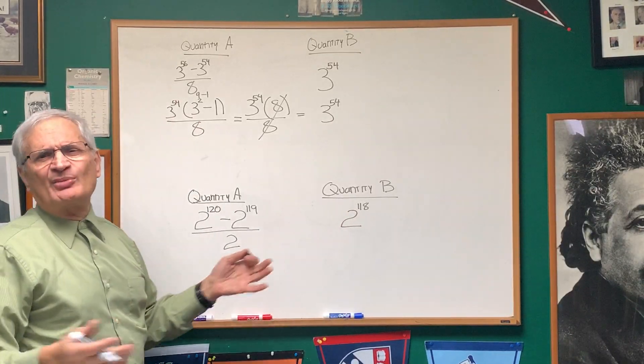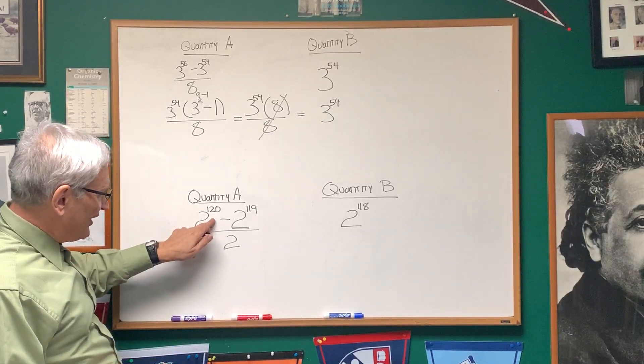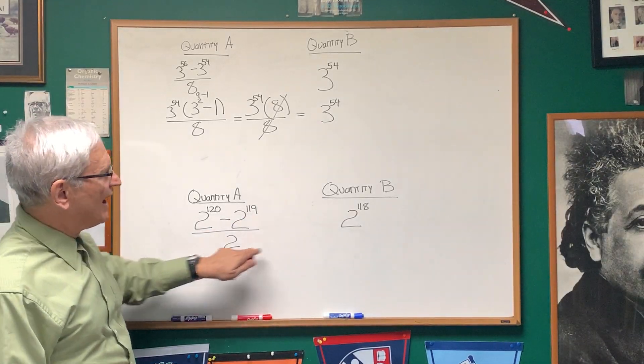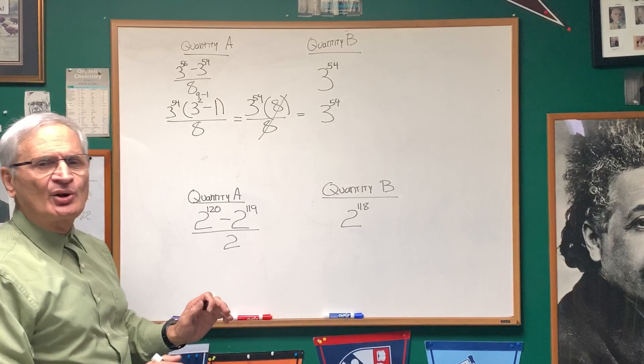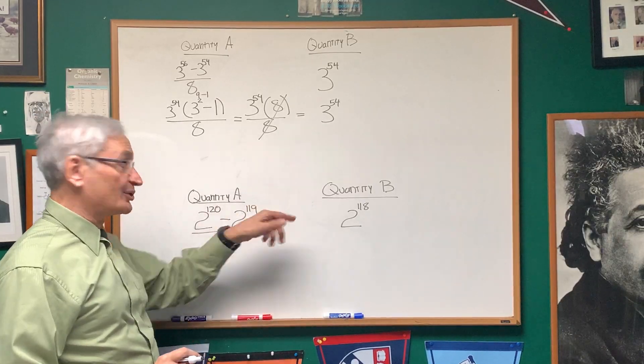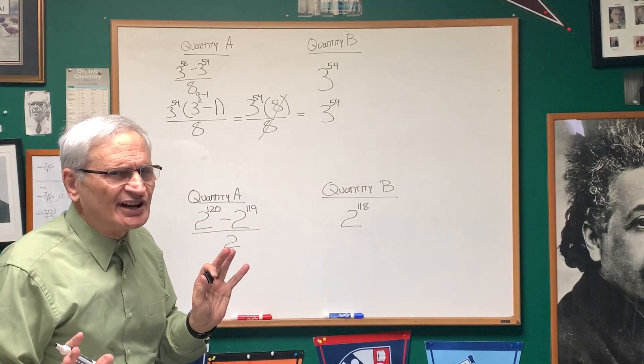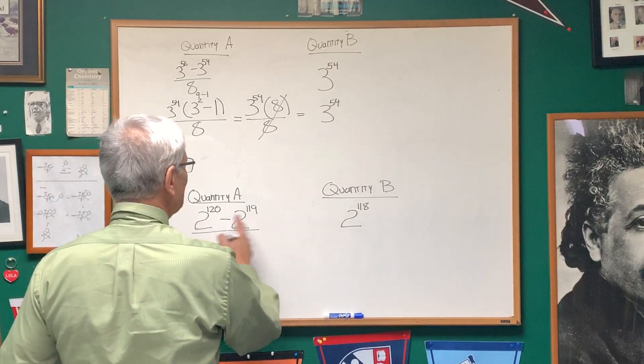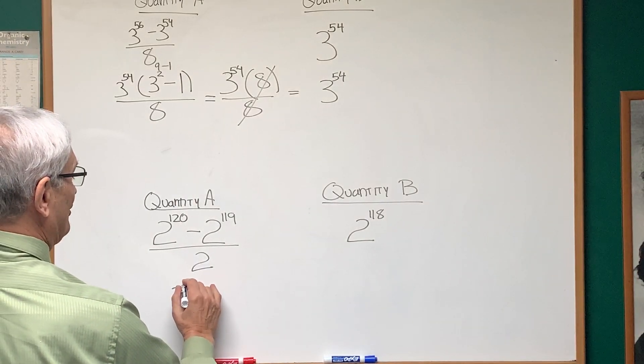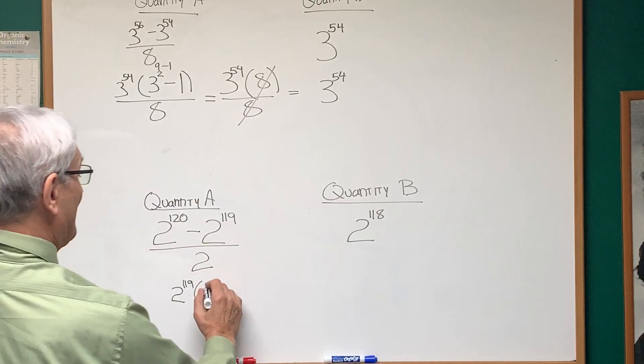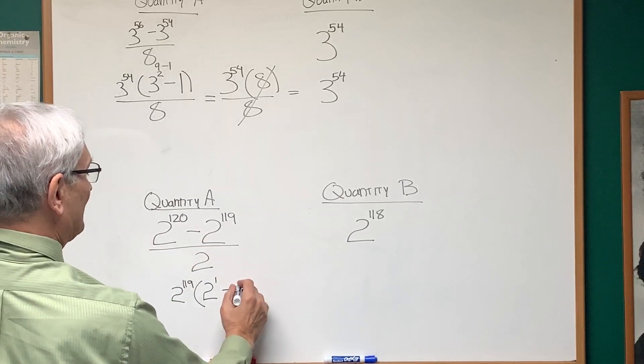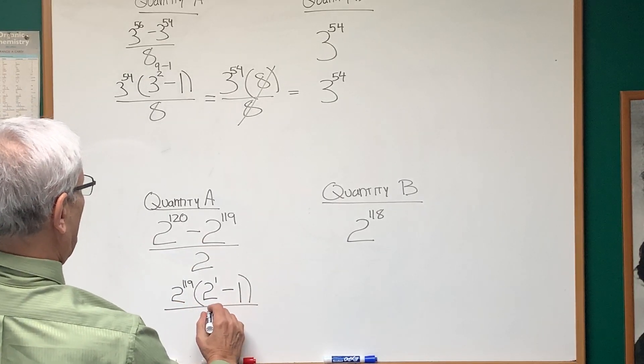This is a very similar problem, almost identical. 2 to the 120th power minus 2 to the 119th power divided by 2 as compared to 2 to the 118th power. Don't be too hasty when answering these questions. Don't say, oh, well, these are larger powers, so I'm going to choose quantity A. No, let's do this. It doesn't take much work to figure this out rationally. Let's factor out the largest power of 2 possible from this numerator. That's going to be 2 to the 119th power. And if we factor that out, we'll get 2 to the 1st power from the 2 to the 120th, minus 1, divided by 2.